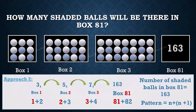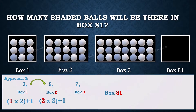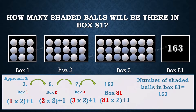We can write the same thing another way. Box 1 has 3 shaded balls: 1 × 2 + 1. Box 2 has 5 shaded balls: 2 × 2 + 1. Box 3 has 7 shaded balls: 3 × 2 + 1. So for box number 81, we get 81 × 2 + 1, which also gives us 163.